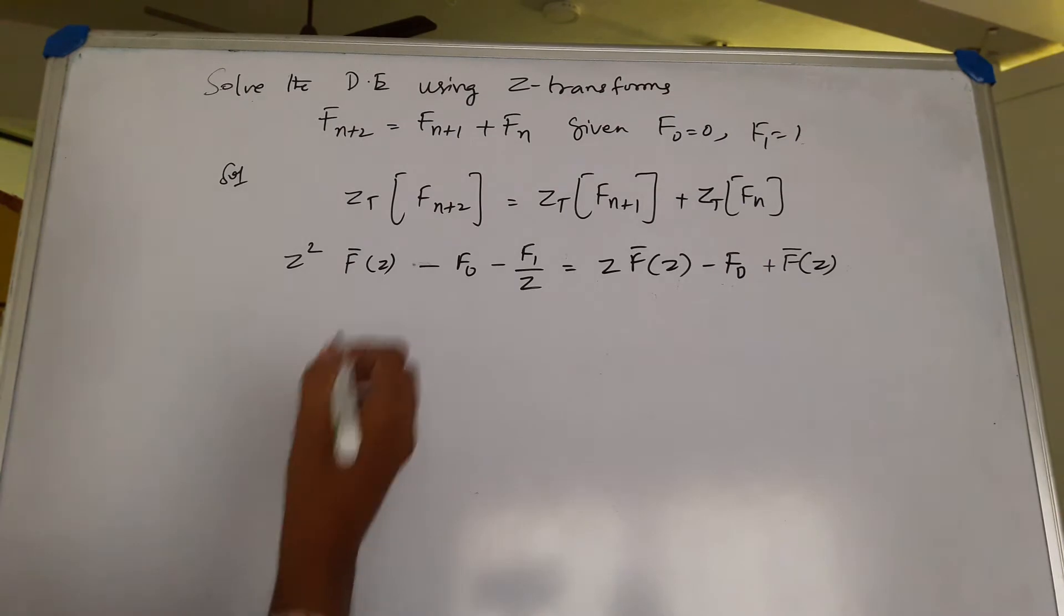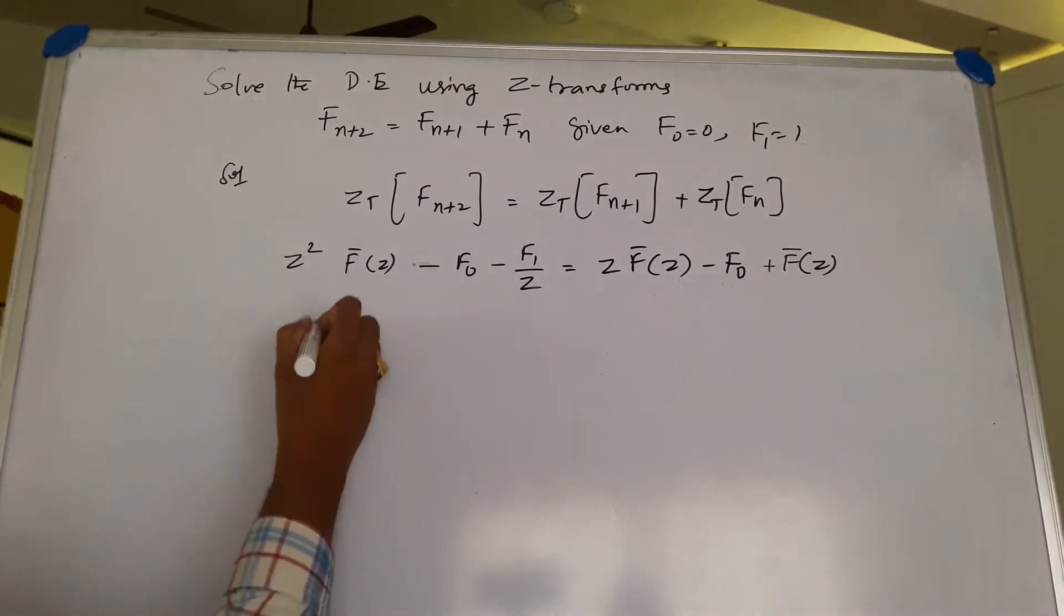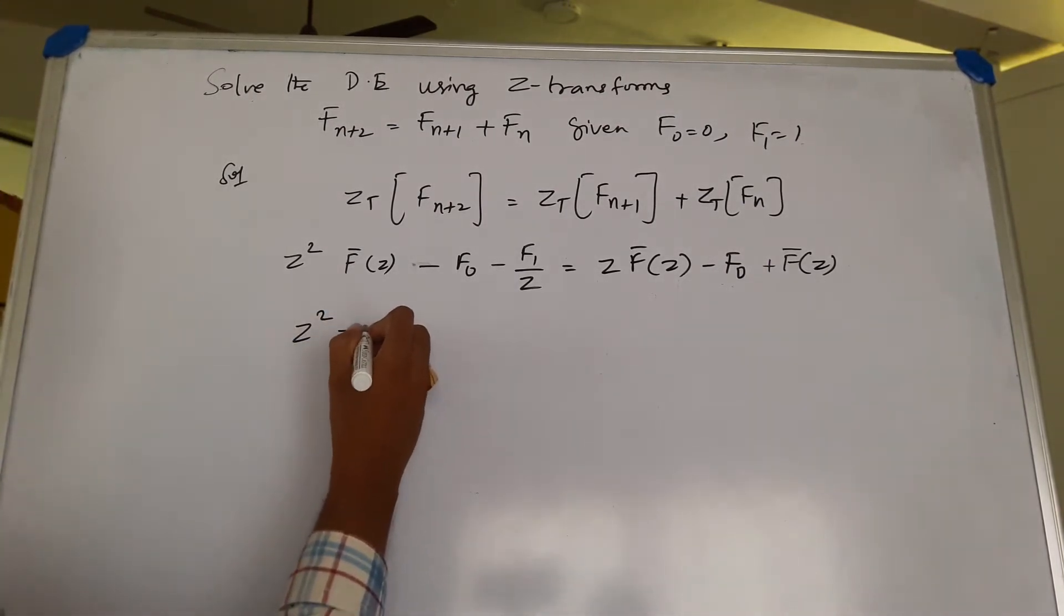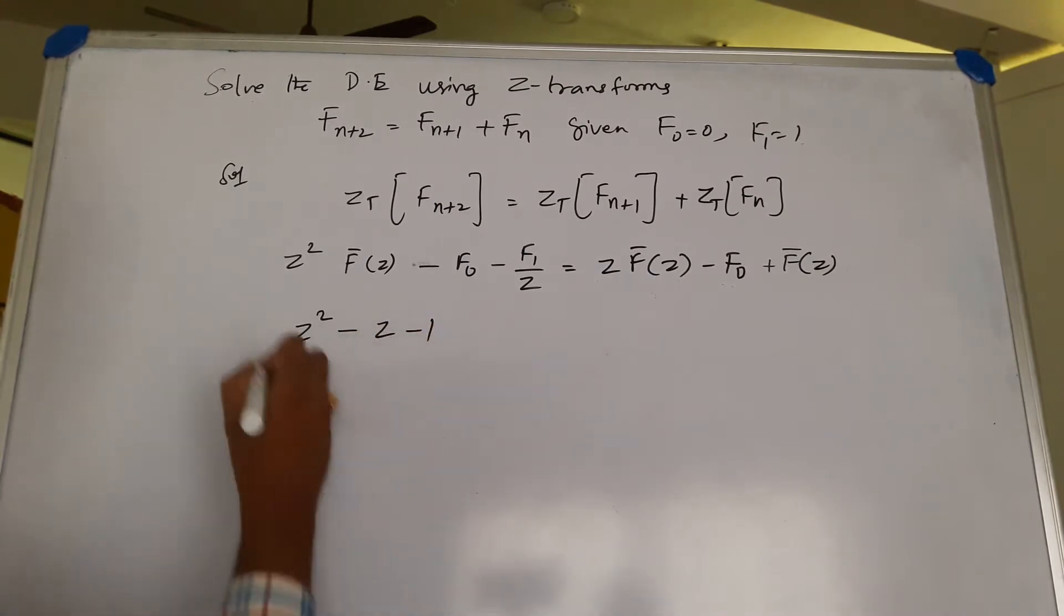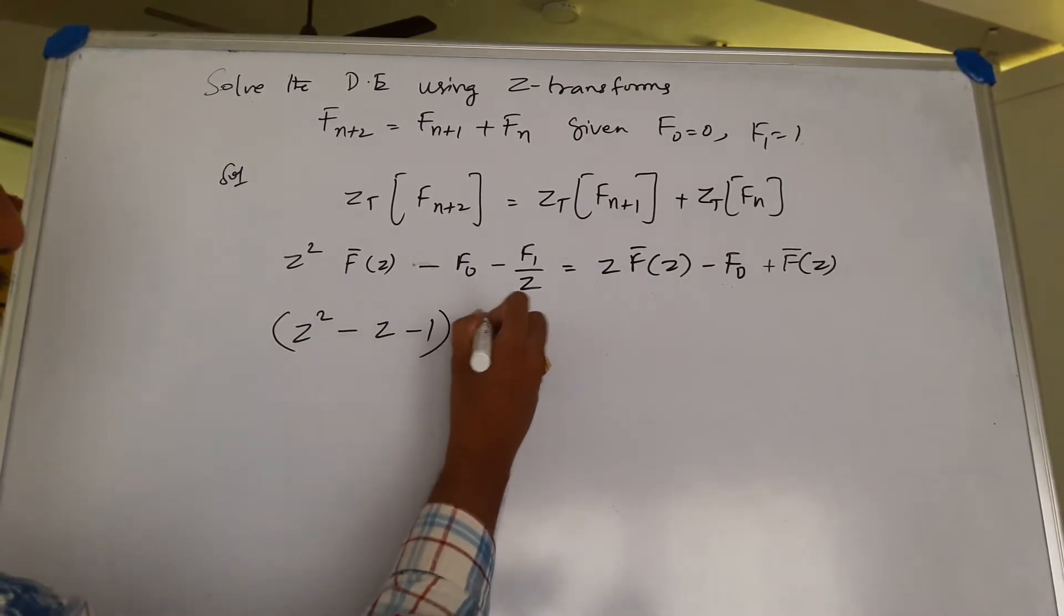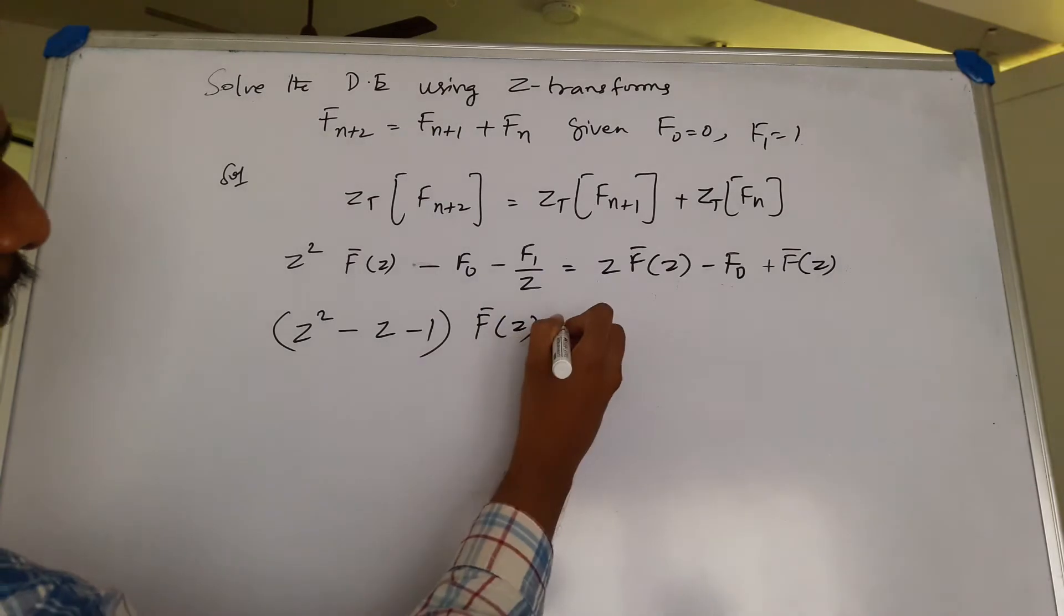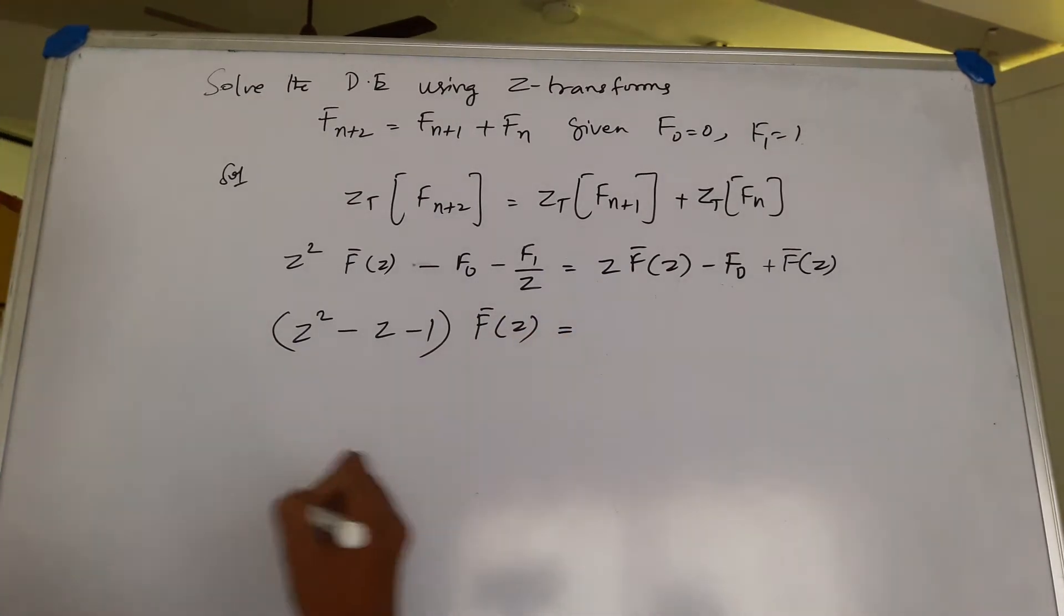Now simplifying this: (z² - z - 1) times F̄(z), which is equal to z.